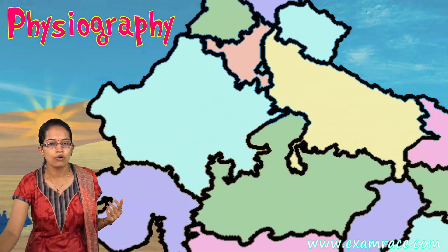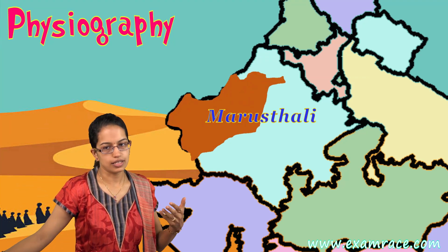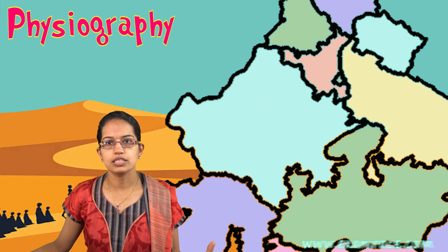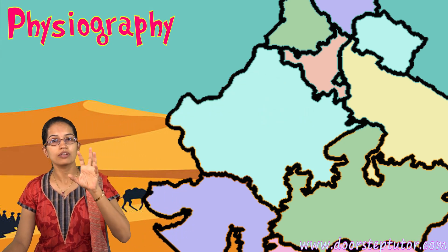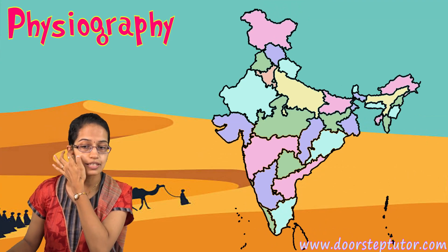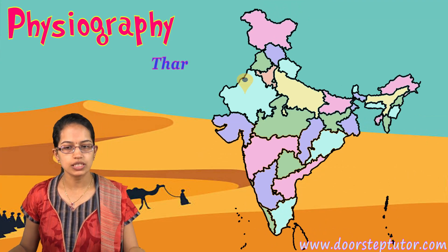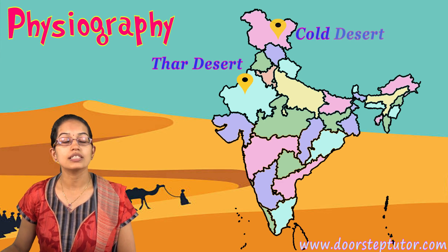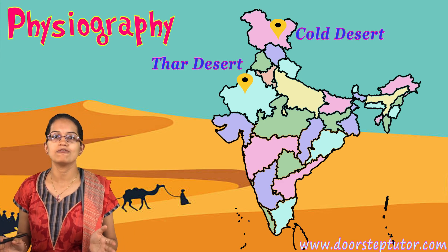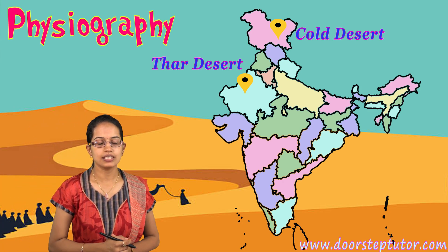In the desert region, Rajasthan's desert is called Marusthali. There are both sandy and stony deserts found in different parts of the world. In India, the warm/dry desert is the Thar Desert, and the cold desert is in the Leh-Ladakh area. So within the country itself, you have both cold desert and warm desert conditions.